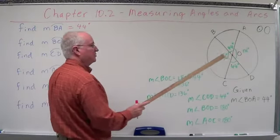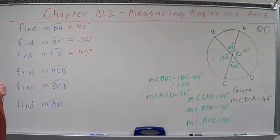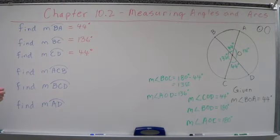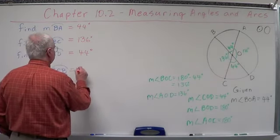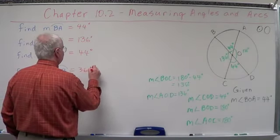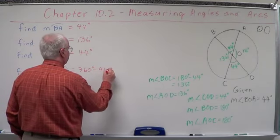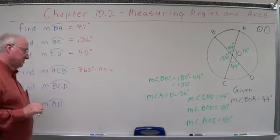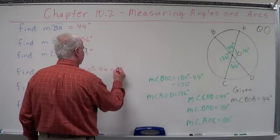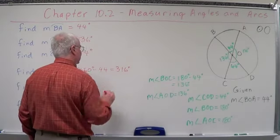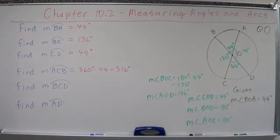Well, what do we have to do? That would be, what's the property say? Measure of a major arc is 360 minus its minor arc. What's the minor arc? The minor arc is 44. So this equals 360 minus 44 equals? What do we got? 360 minus 44. What do we got? I think it's 316. Correct me if I'm wrong, please.